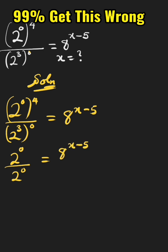By the law of indices, n raised to the power of 0 equals 1 — meaning anything raised to the power of 0 is 1. So 2 raised to the power of 0 over 2 raised to the power of 0 cancels to give us 1, which equals 8 raised to the power of x minus 5.